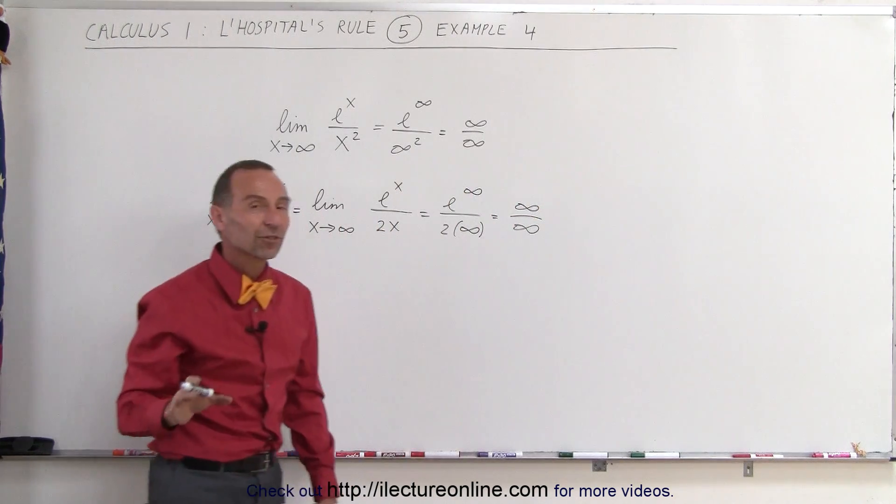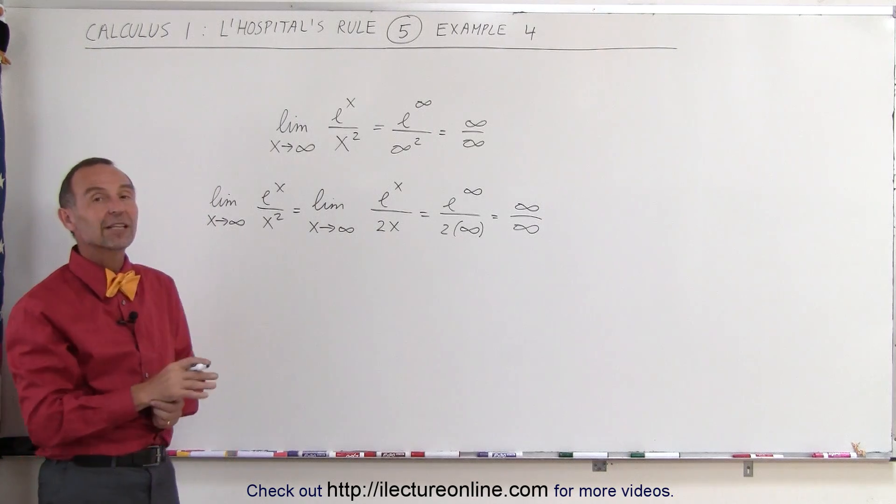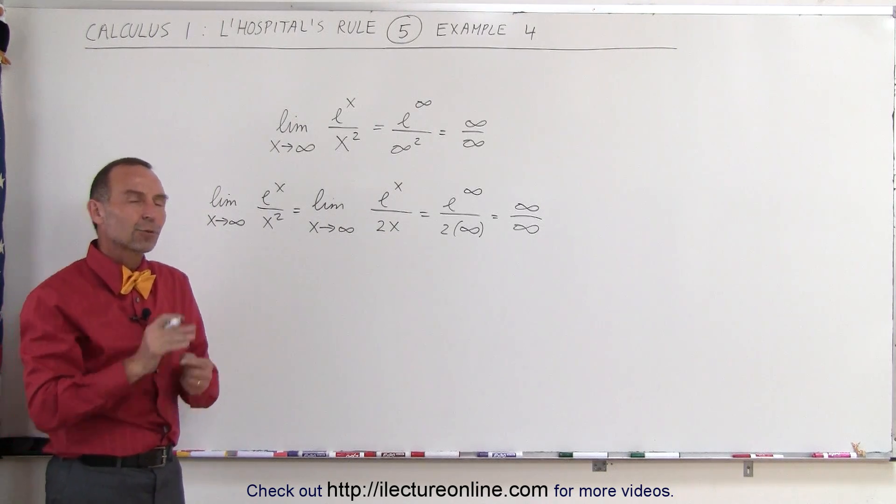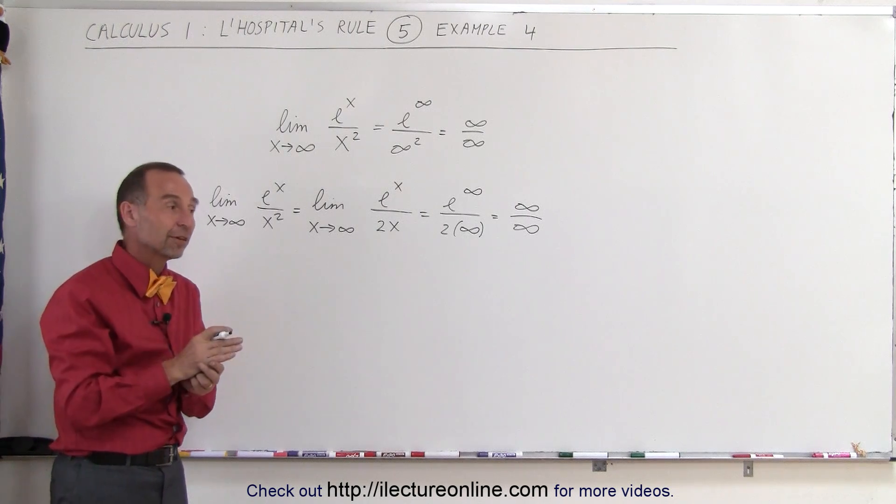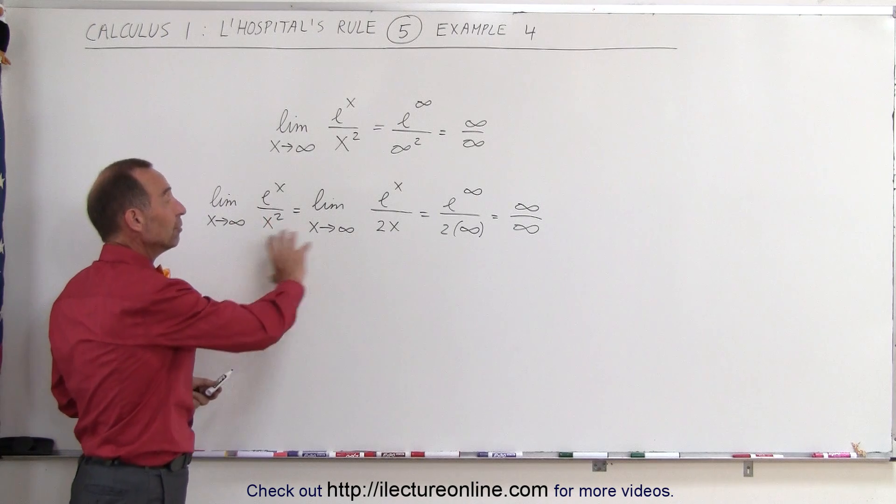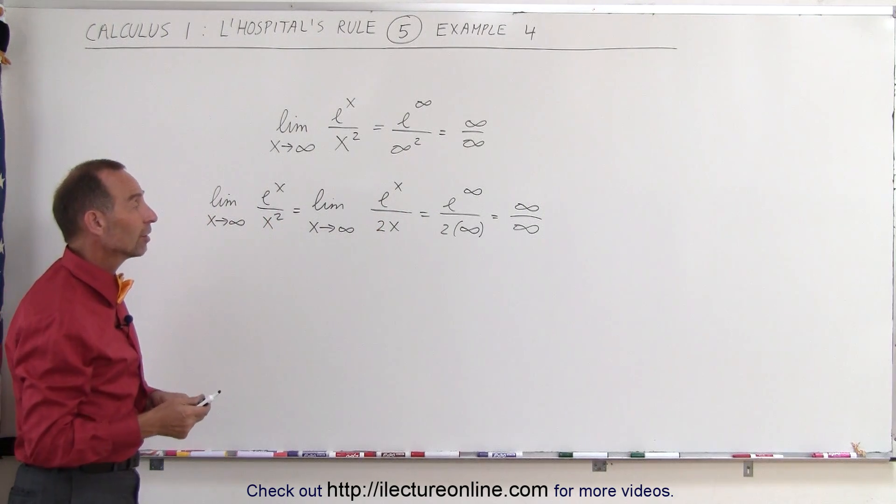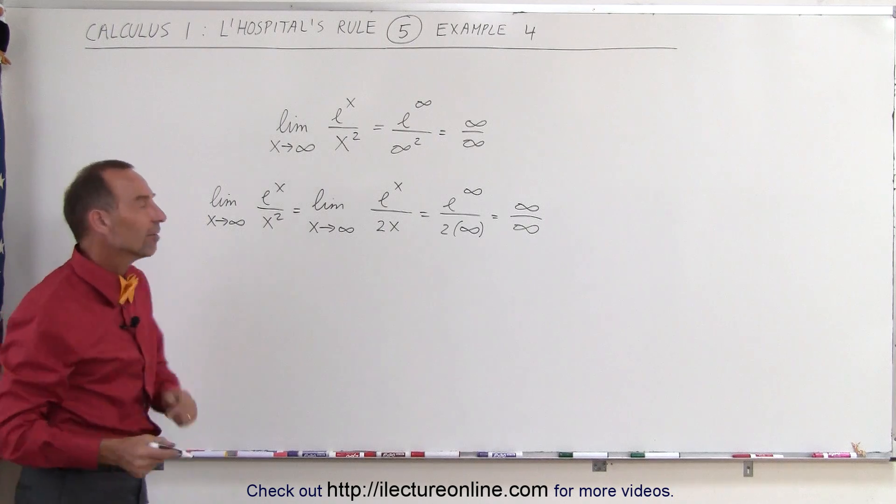So it seems at first that L'Hospital's rule did not help us - we still ended up with an infinity divided by infinity condition. But if we took the first derivative, maybe we can now take the derivative again, because this is now a brand new function and we end up with an infinity over infinity condition, so let's take the derivative again and see what happens.